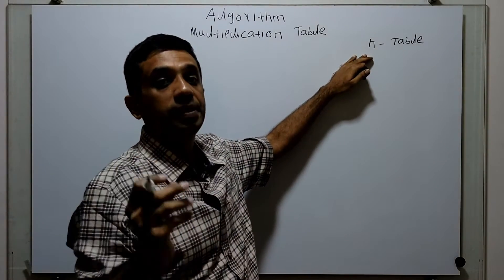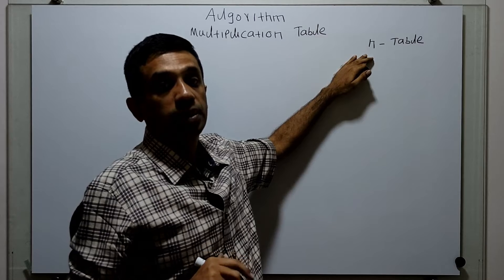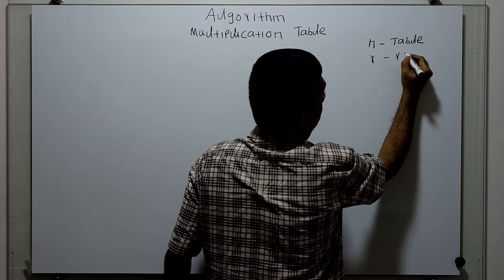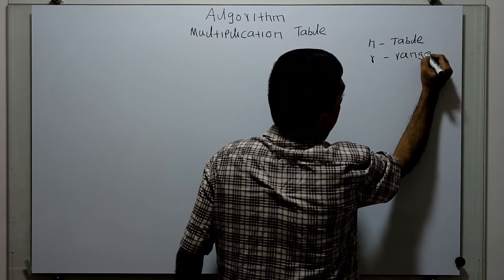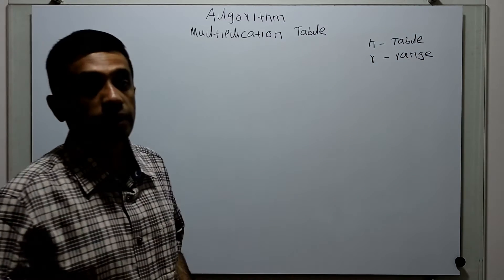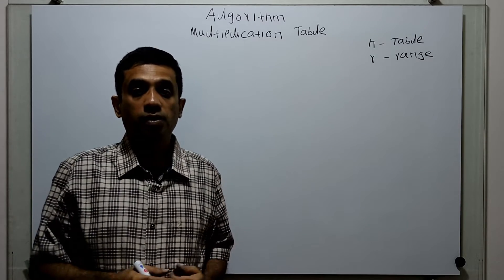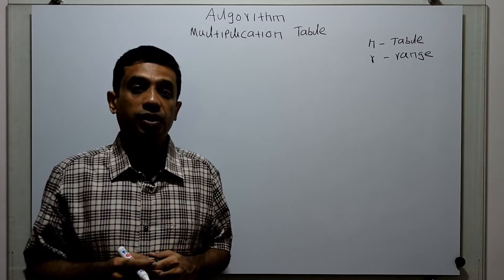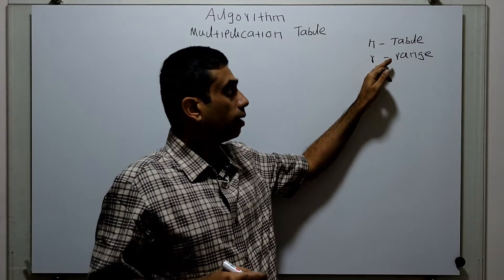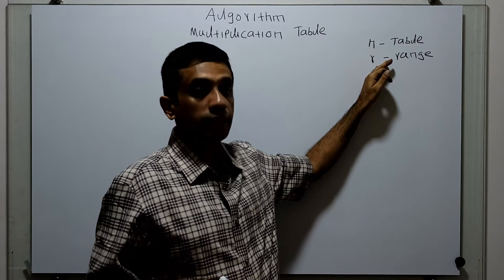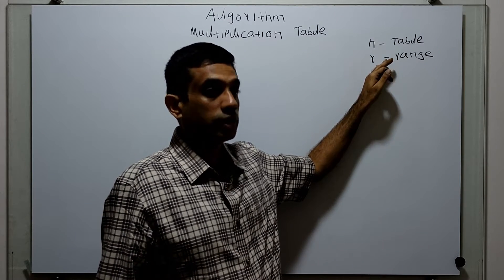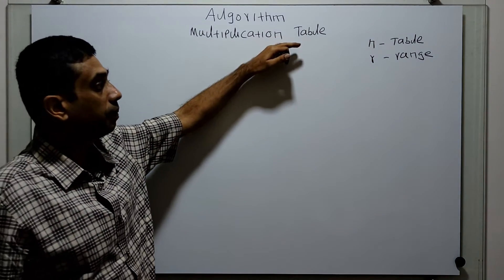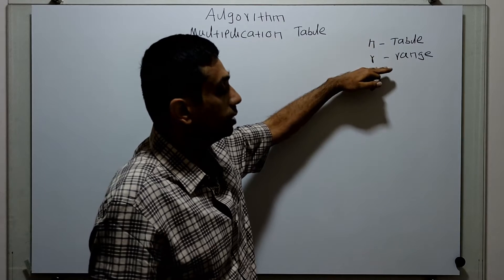For example, the 5th table, 10th table, 14th table, and so on. And R is for range — up to what range we are supposed to print. For example, the 5th table up to 10, or the 5th table up to range 16. So R is for range. I am going to get two inputs from the user: one is the table and another one is the range.